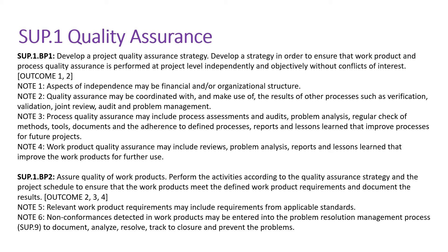BP2 talks about assuring quality of work products — perform the activities according to the quality assurance strategy and project schedule to ensure that the work product meets the defined requirements, and document the results. In BP1 we defined a quality assurance strategy; in BP2 we are executing that plan. When we execute it, we will see some compliances and non-compliances. At that point we have to document, analyze, and resolve the identified issues, track identified non-conformances to closure, and prevent problems in the future.